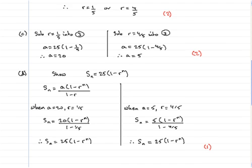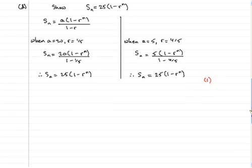We're now on the last part of the question, part E. We're told that given r takes the larger of its two possible values, find the smallest value of n for which Sn exceeds 24. You might like to try that one. Take a pause, come back when you're ready.